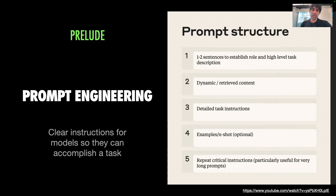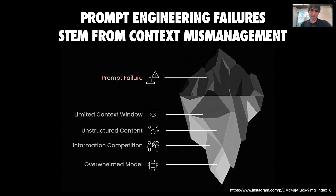You might have heard of prompt engineering — the practice of writing clear instructions for models so they can accomplish tasks. Folks test, evaluate, and iterate on prompts to improve the chances of getting high quality output. But a smart prompt doesn't necessarily guarantee great outcomes. Many of us have tried tweaking words endlessly, adjusting system prompts, only to see failures. As this iceberg here shows, the real issues are often below the surface with mismanaged context.